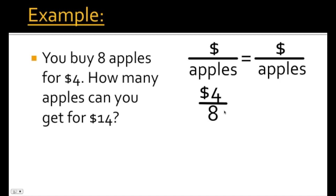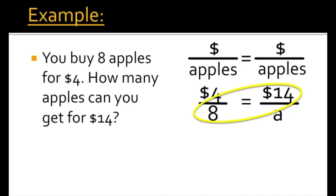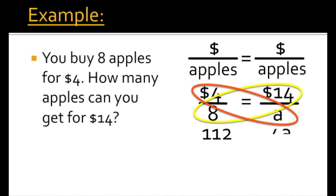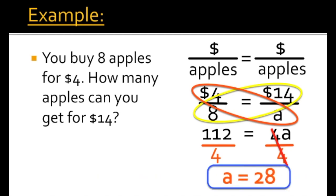The other side is going to be set up the same way, but we're missing information — we're looking for the number of apples. We know we paid $14, so that goes on top, and the bottom is represented by a variable A, giving us $14 over A. A is the ideal choice because we're talking about apples. Now we cross-multiply: 8 times 14 gives us 112, and 4 times A gives us 4A. So we have 112 equals 4A. Dividing both sides by 4, the 4s cancel, and A equals 28.